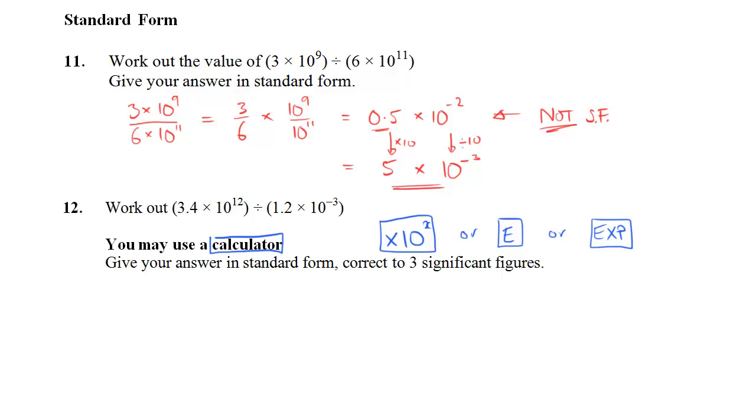Then divide it by 1.2. Then press the button. Then minus 3. Put that in your calculator and it gives you a very long decimal, 2.833333... I'm not sure how many 3's there are until my calculator display runs out. And it says times 10 to the power 15.